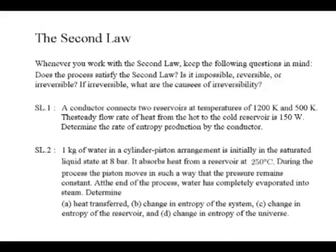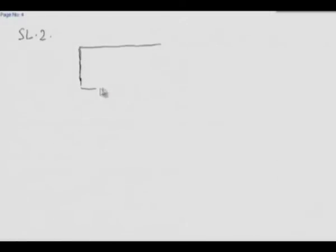At the end of the process, the water has completely evaporated into steam. That means we are going from the saturated liquid state to the dry saturated vapor state. Determine: A - heat transfer, B - change in entropy of the system, C - change in entropy of the reservoir, and D - change in entropy of the universe. First, a system diagram. We can sketch the system diagram - it is a cylinder piston arrangement, with our system preferably shown by dotted lines.